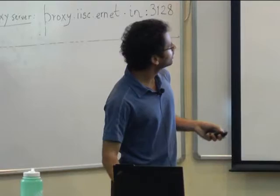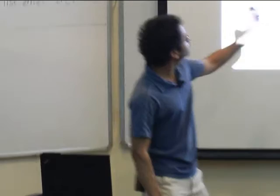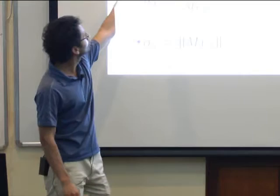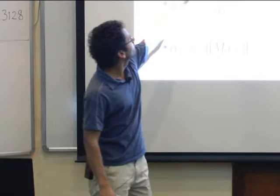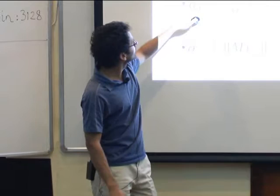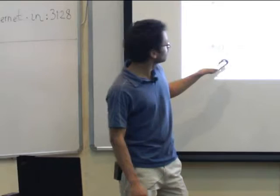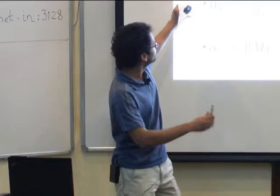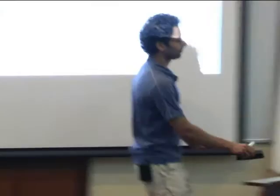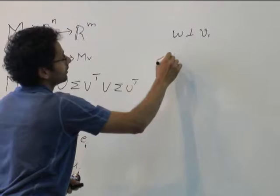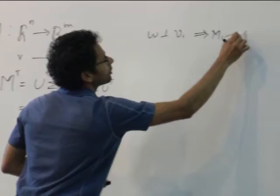To construct the SVD of a given matrix M, we look at the function ‖Mv‖ and maximize over all unit vectors v. The maximum is achieved at some point since the set is compact, and the maximizing vector is the first right singular vector V₁. The normalized version of MV₁ is the first left singular vector U₁, and ‖MV₁‖ is the first singular value σ₁.